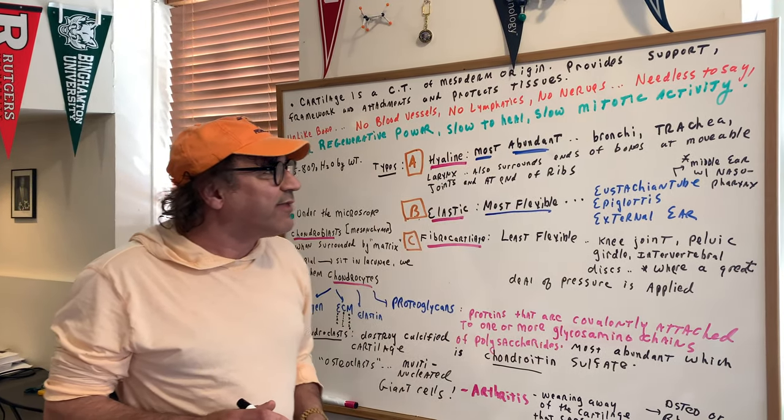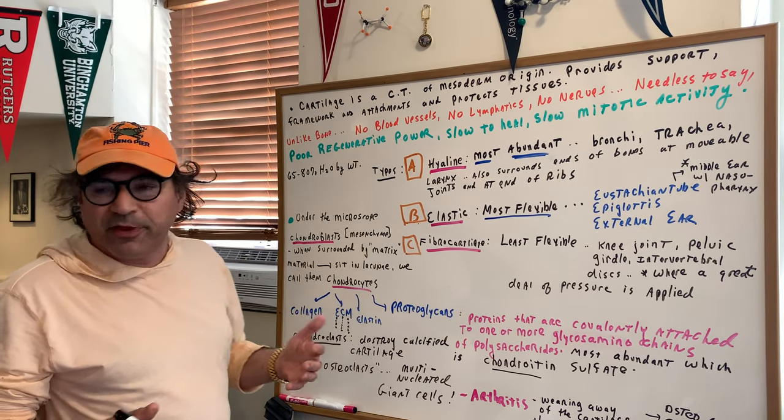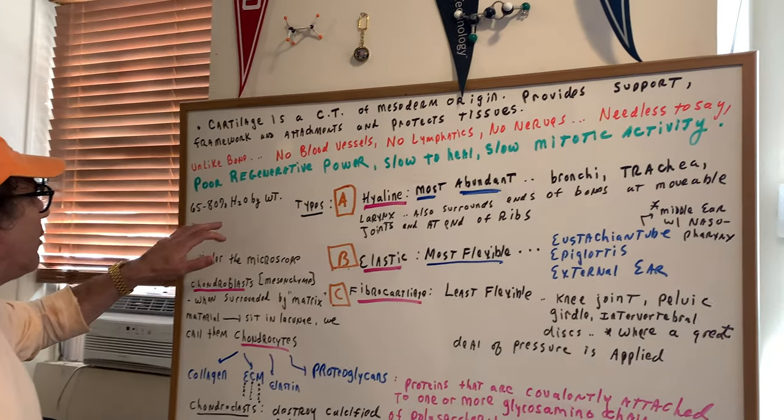There's very slow mitotic activity. So, any blood supply would be, obviously, from diffusion from the nearby environment. But there's no blood supply in cartilage.